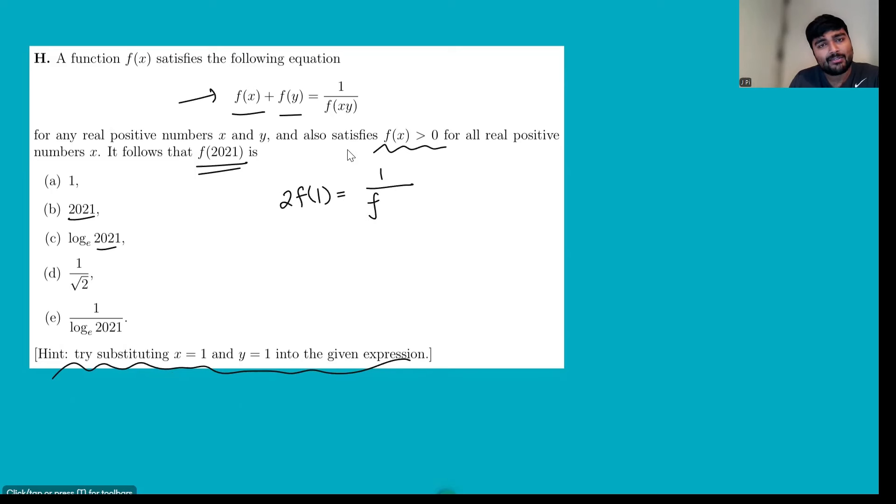On the right-hand side, we're going to have 1 over f, and then 1 times 1 is just 1. So 2f(1) equals 1 over f(1). Let's multiply both sides by f(1), so we get f(1) squared times 2 equals 1. If we divide by 2, f(1) squared is 1 half. Square rooting gives us f(1) is 1 over root 2. We don't have to worry about plus or minus here because we're told f(x) must be positive.